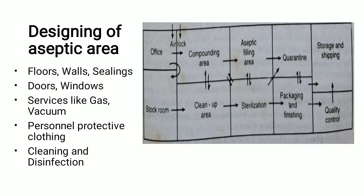Regarding floors, walls, and ceilings in the aseptic area: these are specially designed surfaces coated with antimicrobial paint. Although they are constructed similarly to normal floors, walls, and ceilings, a special antimicrobial coating is applied to those surfaces to ensure no microbial contamination can occur.